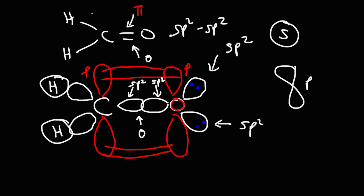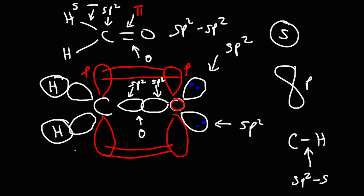Looking at the C–H bond: hydrogen simply has an s orbital, and carbon is sp2 hybridized, so the orbital overlap of the C–H bond is s and sp2. This is the overlap of hydrogen's s orbital with carbon's sp2 orbital.